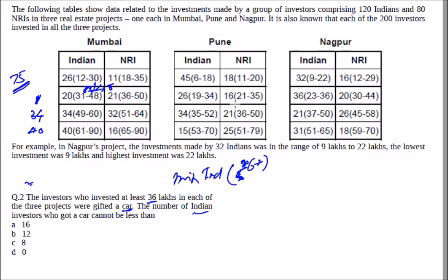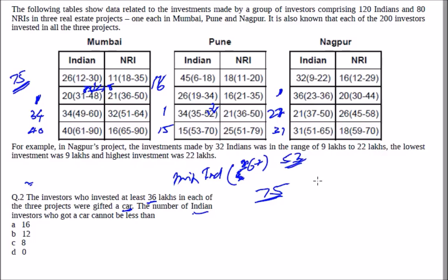In Pune, we just need ≥36 lakhs. Only one person could be investing at 52, all others between 35 and less than 36. So only one person there plus 15 people in the higher band — giving 16 people in Pune. In Nagpur, there is at least one person at the minimum of the top band, all 21 are above 36, plus 31 more — giving 53 people. So there are 75 cases in Mumbai, 16 cases in Pune, and 53 cases in Nagpur.